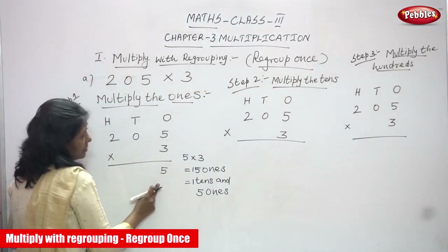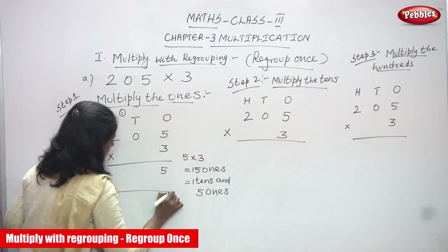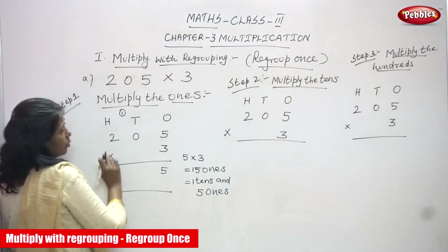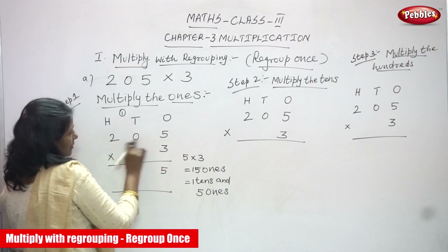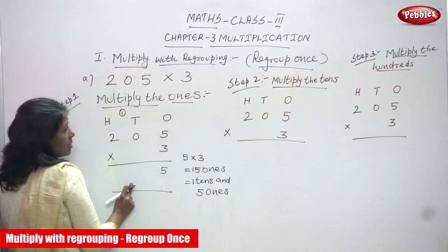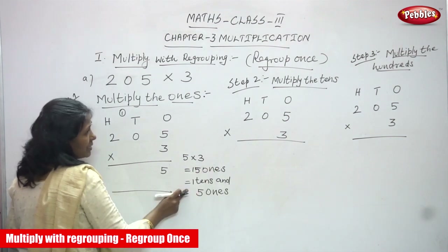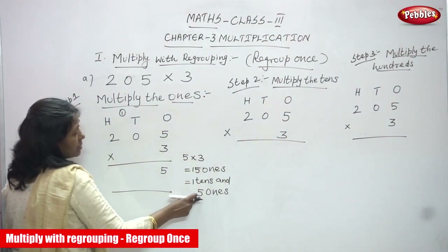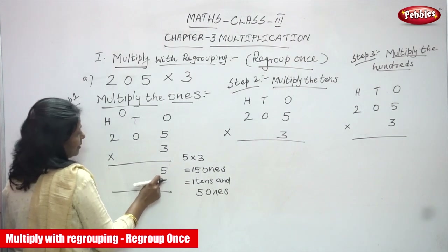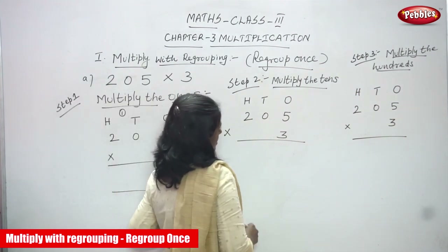The remaining one ten is carried over to the tens place. So step one, multiply the ones, is complete. You write 5 in the ones place and carry one ten over to the tens place.